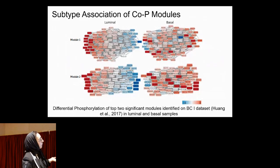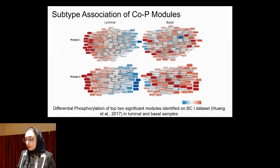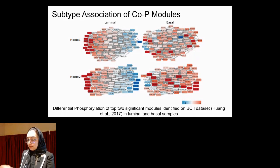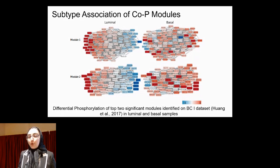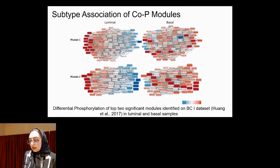Here is the visual view of the top two modules. The color of each node represents the average fold change across luminal samples and basal samples respectively. As you can see in Module 1 and Module 2, almost half of the modules are dephosphorylated across the luminal samples on average, whereas they turn red in the basal samples — visually demonstrating how these modules can distinguish between the two subtypes.